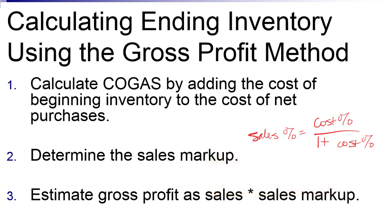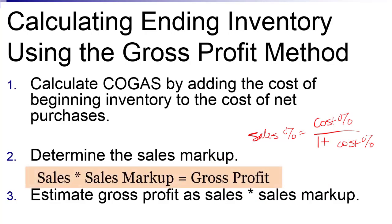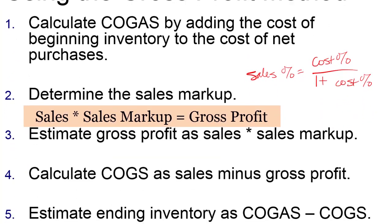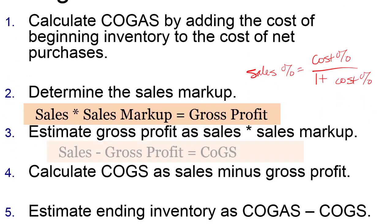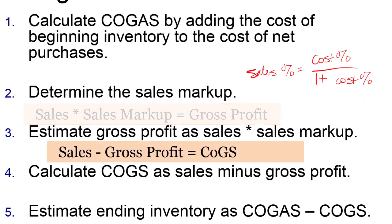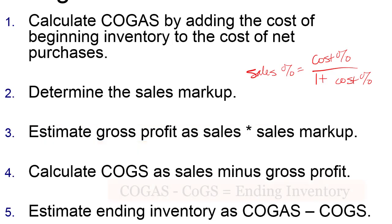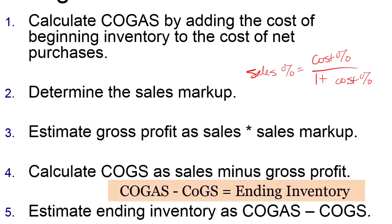Step three: once I've got the sales markup, I take sales times the sales markup to get my gross profit number. Then cost of goods sold equals sales minus gross profit. Finally, ending inventory equals cost of goods available for sale minus cost of goods sold.